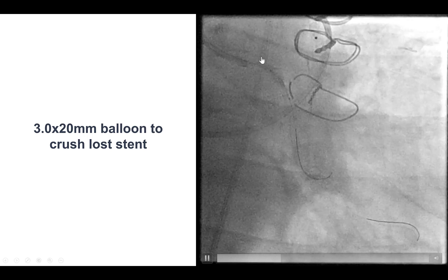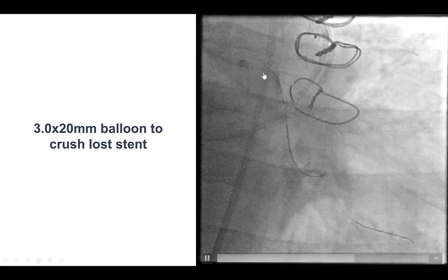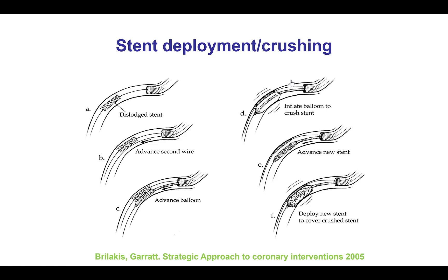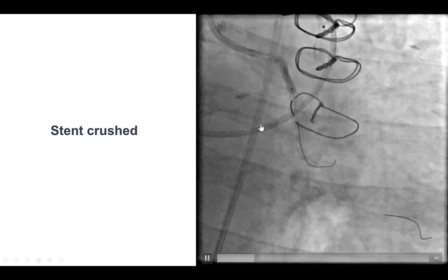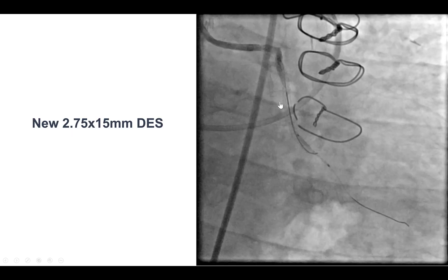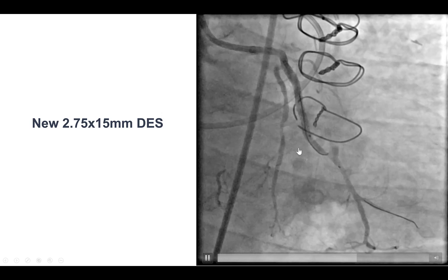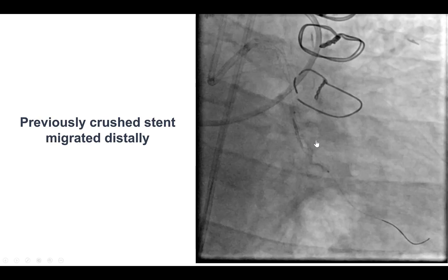So we then decided to crush the stent. We took a 3.0 by 20 millimeter balloon next to the lost stent and inflated the balloon there, and that crushed the stent. We did not place an additional stent to secure it in place, which will become relevant subsequently. We then were able to deliver a new drug-eluting stent using a guide extension — 2.75 by 15 mm — and that was successfully delivered and deployed.